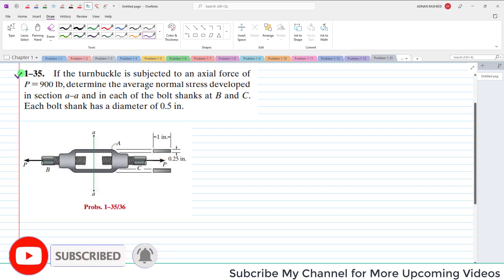In this problem, it is given that if a turnbuckle is subjected to an axial force of 900 pounds, determine the average normal stress developed in section A-A and each of the bolt shanks at B and C. Each bolt shank has a diameter of 0.5 inch.